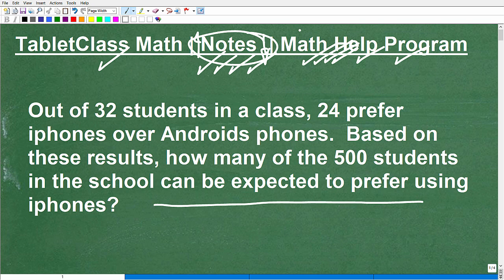Okay. So, we're going to get into this particular phone word problem. So, let's just quickly read it once, and I'm going to give you an outline, and we'll solve it. So, it says, out of 32 students in a class, 24 prefer iPhones over Android phones. So, based on these results, how many of the 500 students in the school can be expected to prefer using iPhones? So, that is our problem, and if you think you know how to solve it, go ahead and do so.